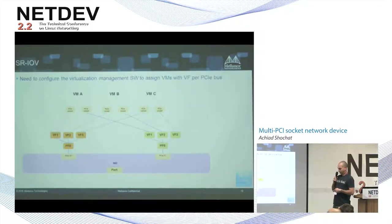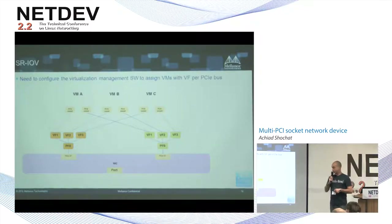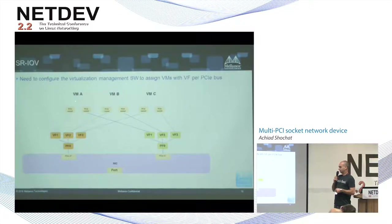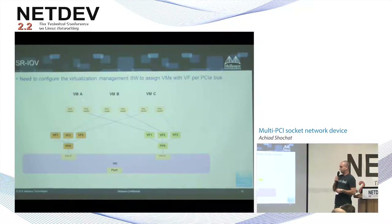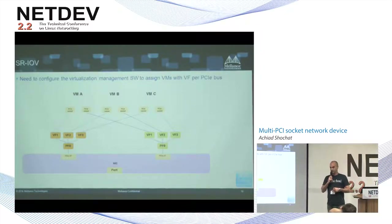In virtualization, we want to give each VM access to the network port, but the network port is accessed through two different PCI devices. We will have to find a way to assign each VM with a virtual function of each PCI bus. Then inside the VM, the same driver that aggregates PCI devices into a single network device will see the two PCI devices, realize they represent a single network port, and instantiate a single network device in the VM — the same view as in the hypervisor.